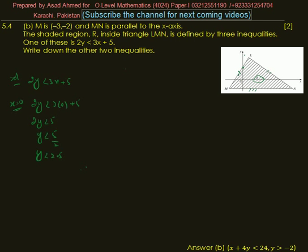the line LM. This is the equation of line 2y = 3x + 5. Now for the second inequality, the equation of line LN is given as x + 4y = 24. This is the equation given in the question.